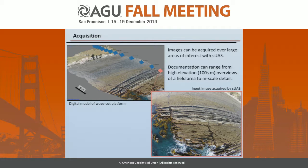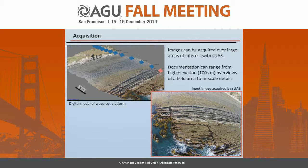I'll walk you through the general workflow of structure-from-motion, starting with acquisition. In the upper left we have a digital model of just a portion of one of those wave-cut platforms, where we can see thin beds that are near-vertically dipping and a much thicker sand bed. Each square floating in space above the model represents the estimated position of the drone when a picture was taken. An example photo is highlighted in the bottom right — you'll notice the near-vertically dipping beds and some fisheye distortion, but this does not affect the model as it is rectified through the software.